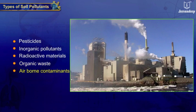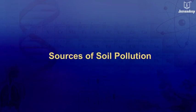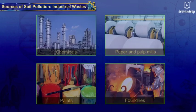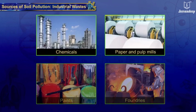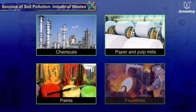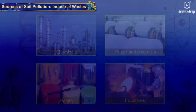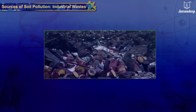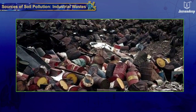Sources of soil pollution: Industrial waste — industries such as chemicals, paper and pulp mills, paints, and foundries produce waste. Thermal power plants create a huge amount of fly ash. The direct dumping of these wastes leads to soil pollution.